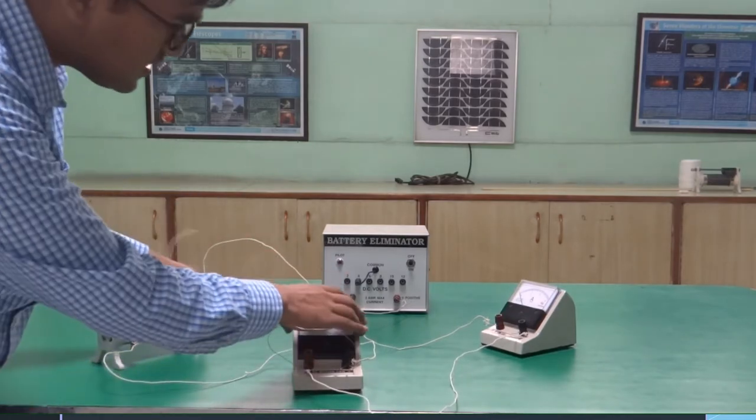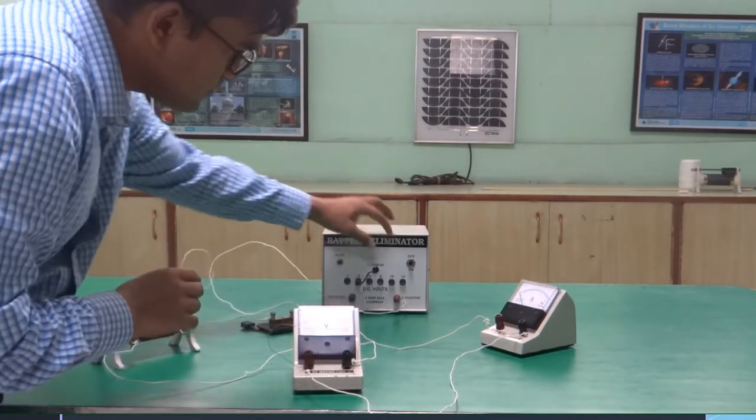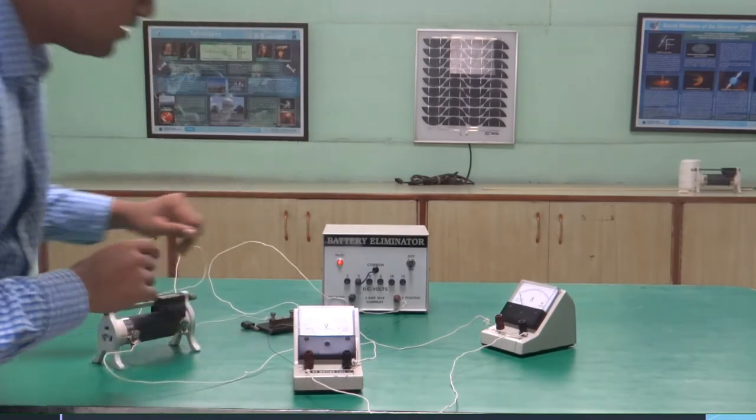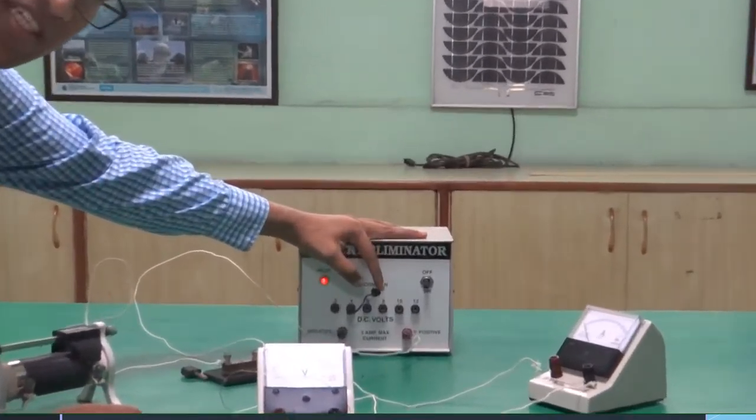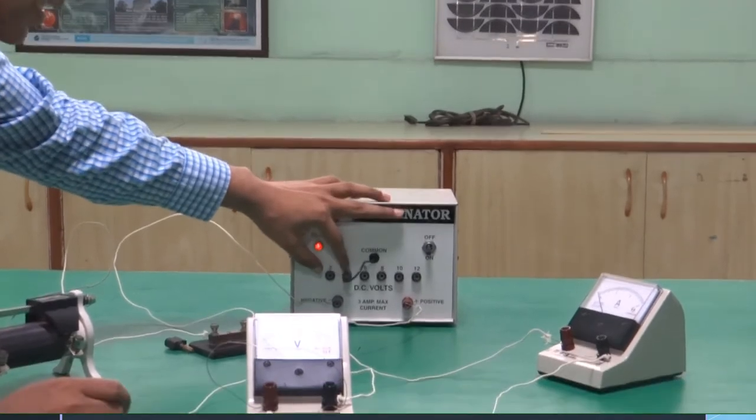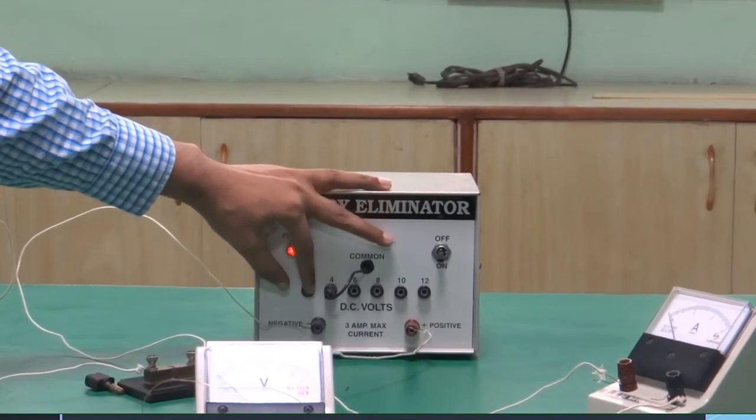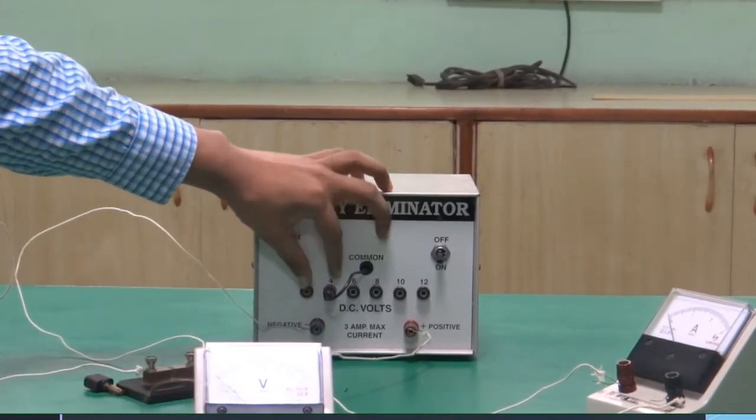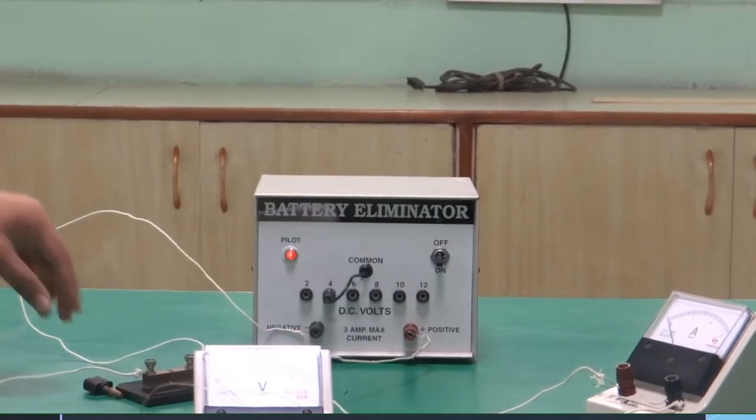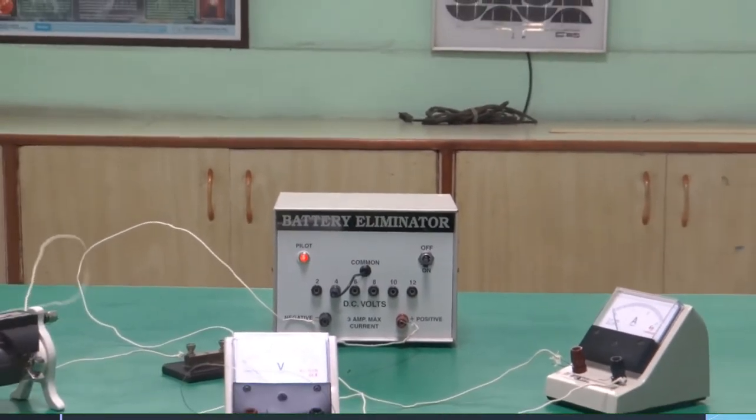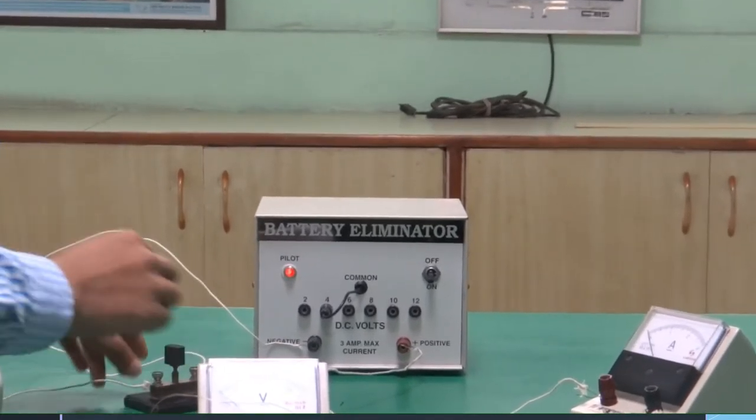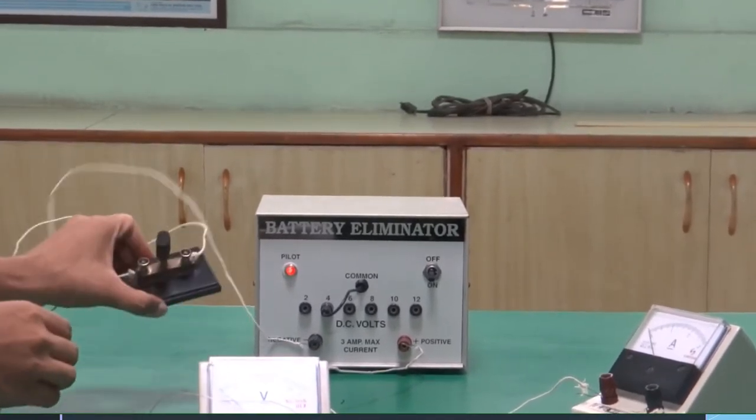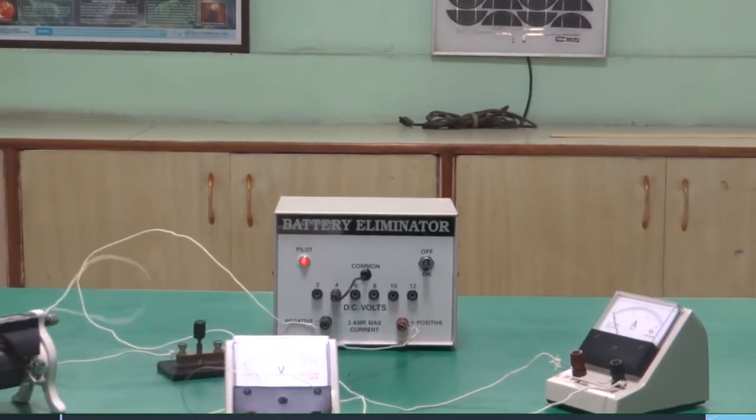Now let's switch on the circuit. We got various options for the voltage readings. So we will keep it at the minimum. At 2 I am not getting much deflection, so I have kept it at 4 volts. When you are going to take the readings, only then insert the key. Ensure that the key is very tight.